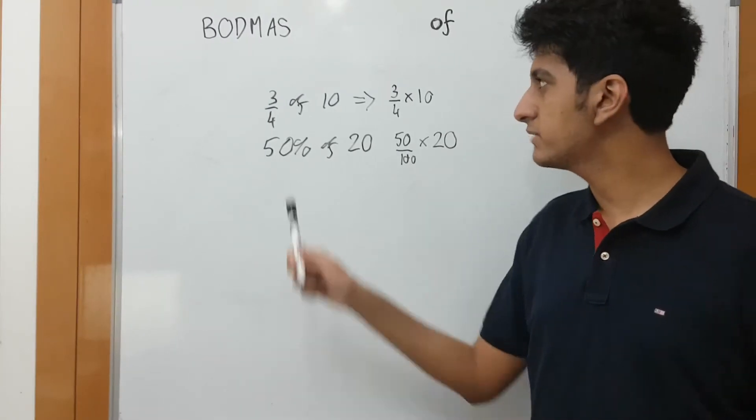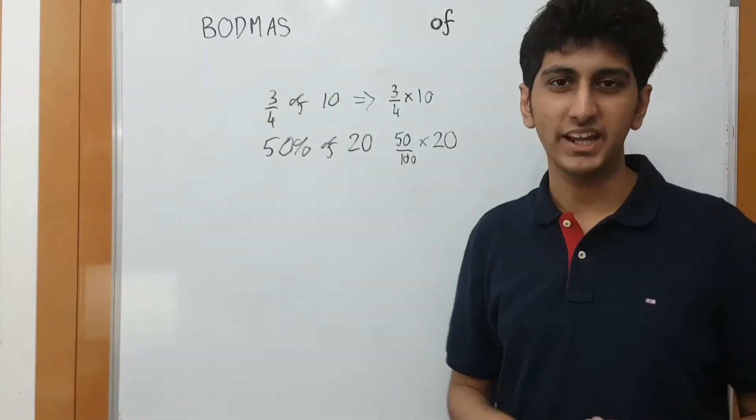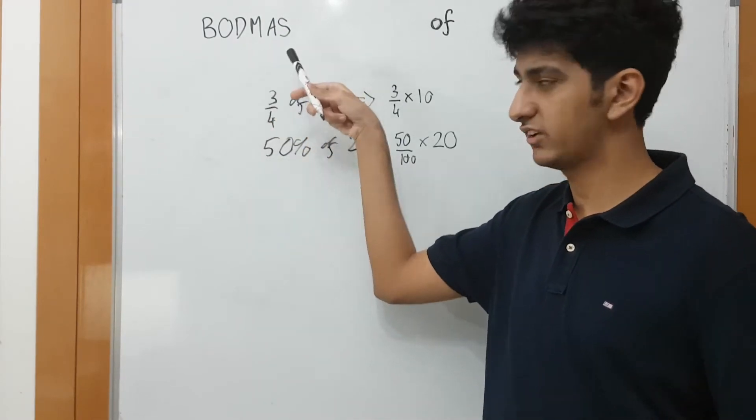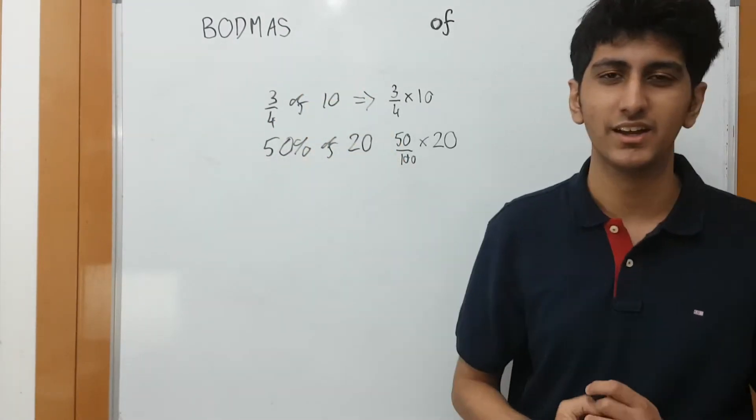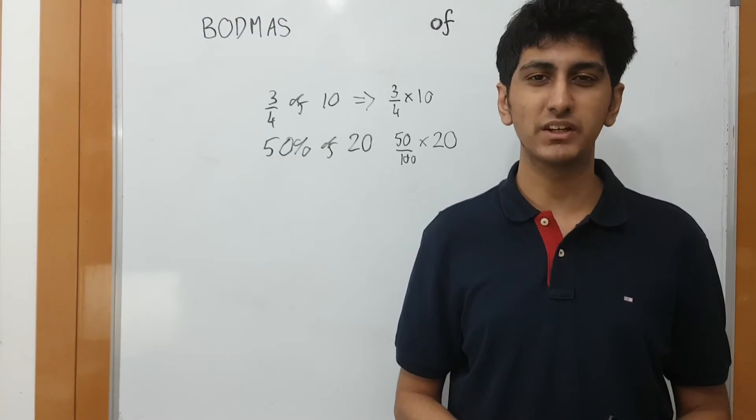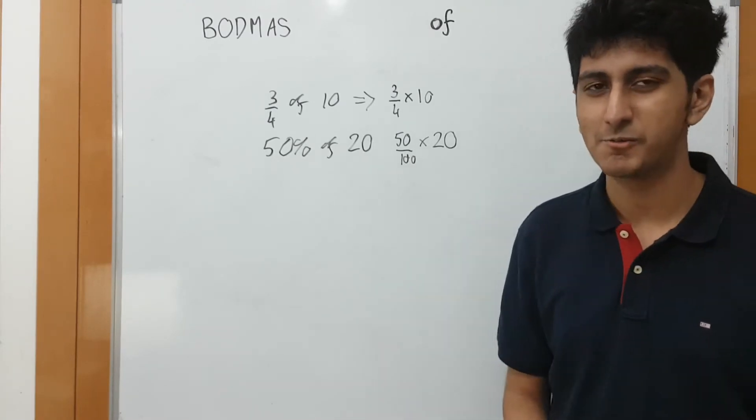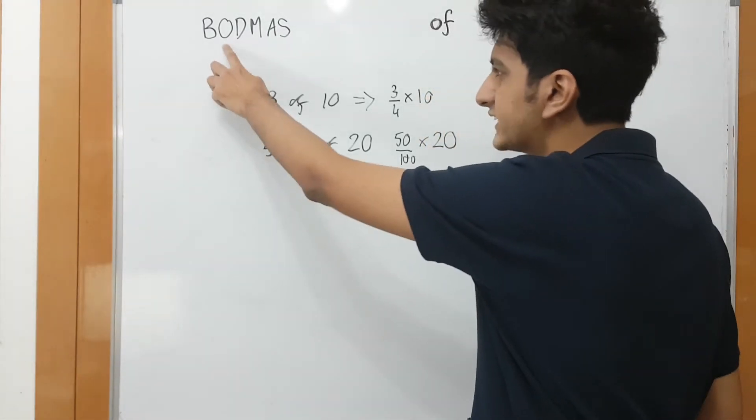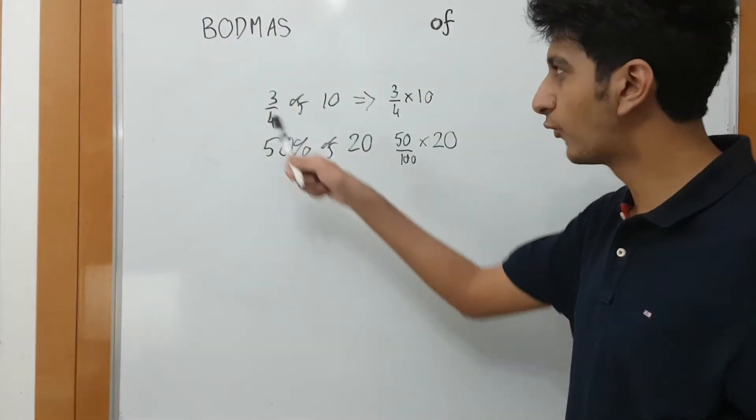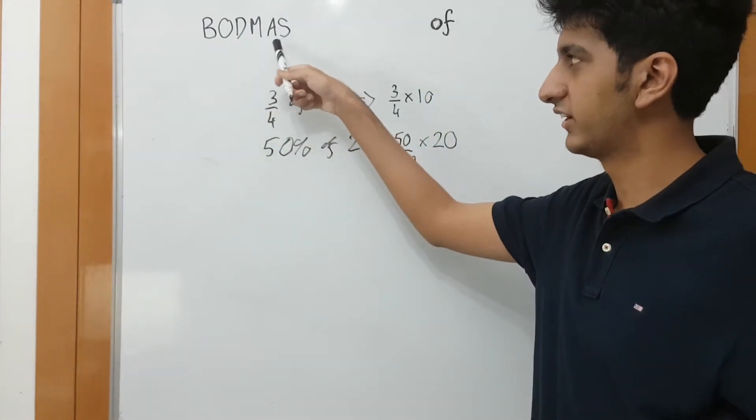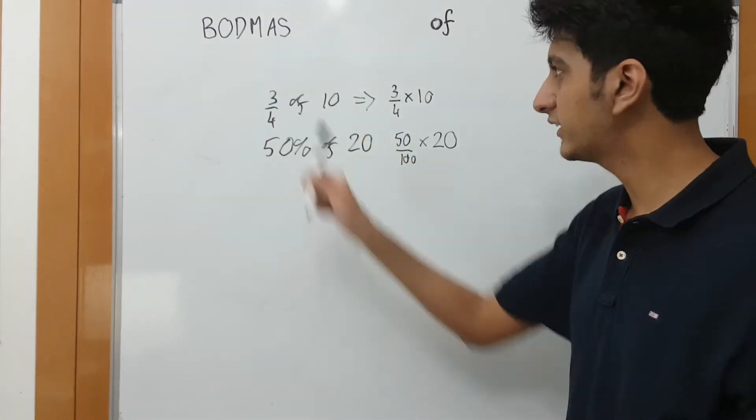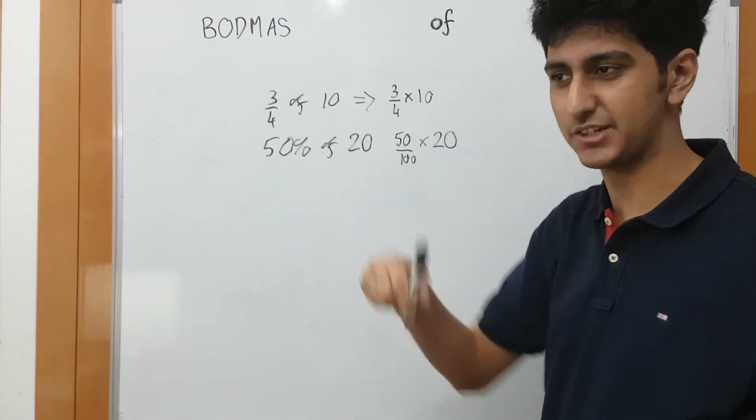But when this of is an expression, which is division, multiplication, addition and subtraction, then you have to follow a specific rule. When will it come? We will solve of before we solve division, multiplication, addition and subtraction. But after B, which is B, we will see what is next class.